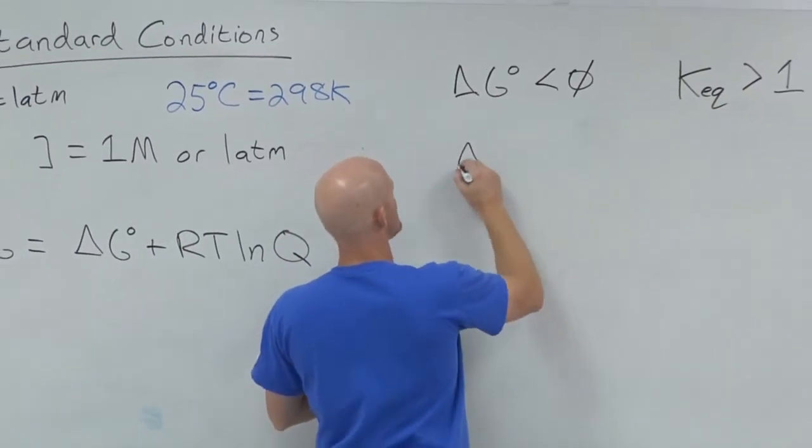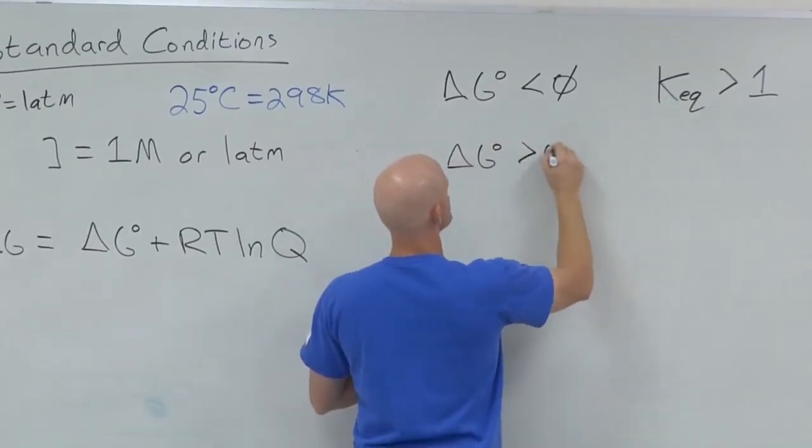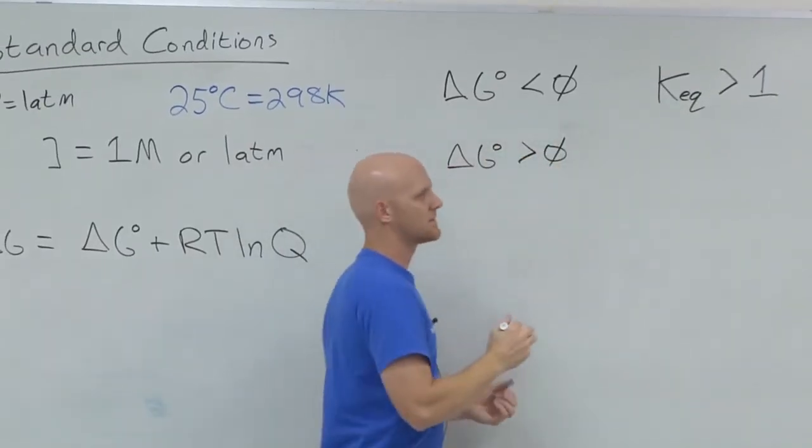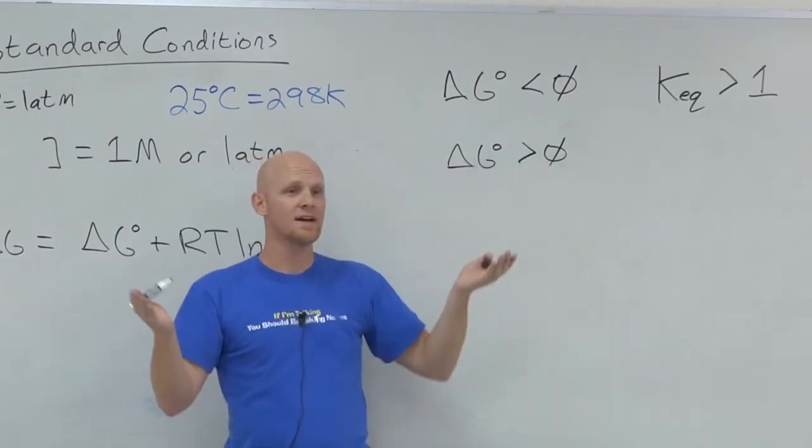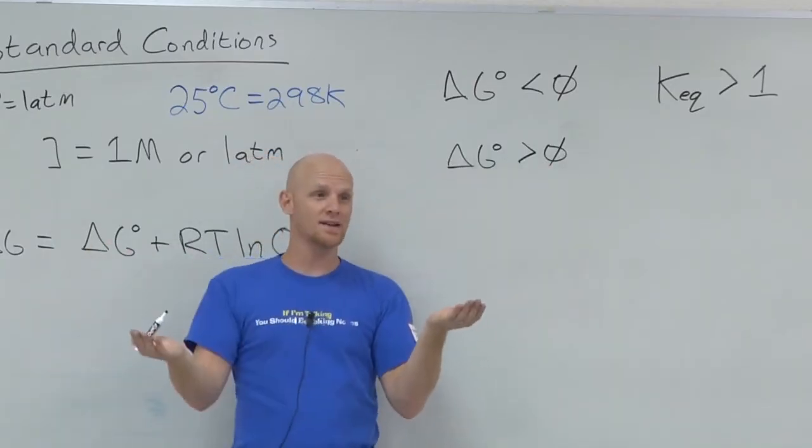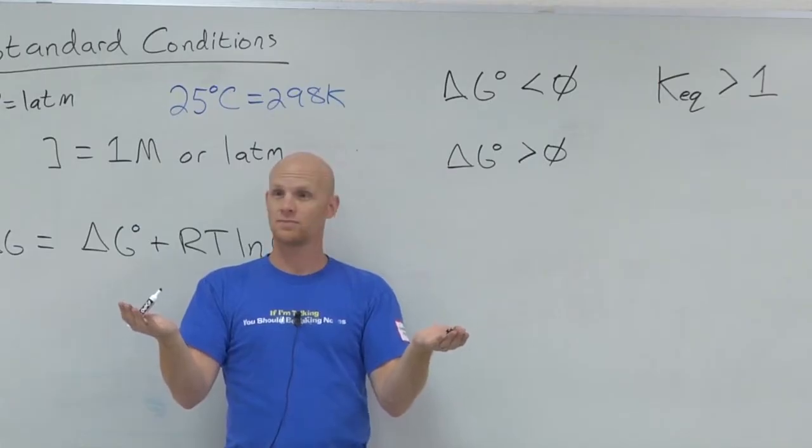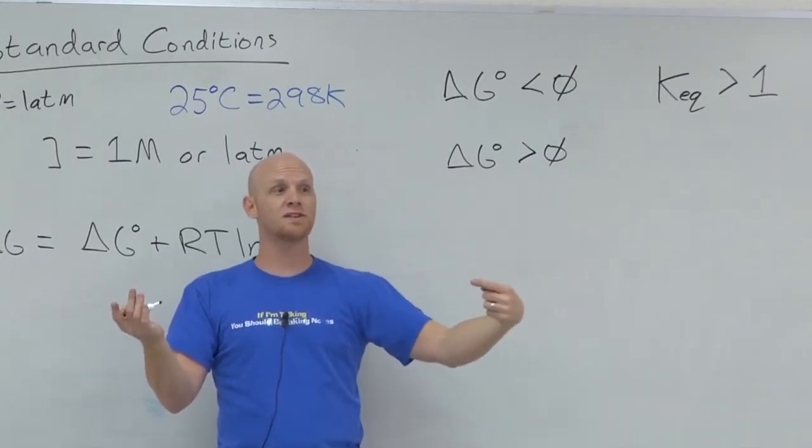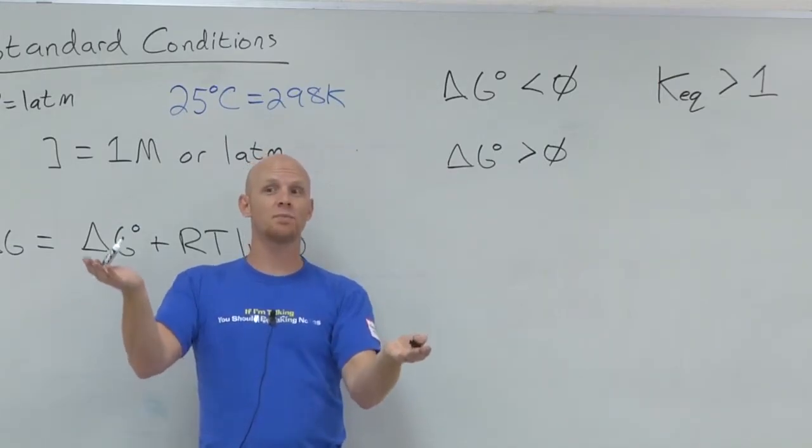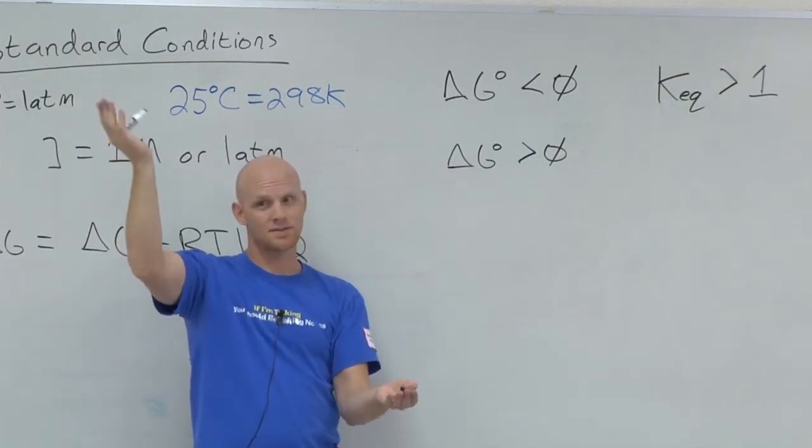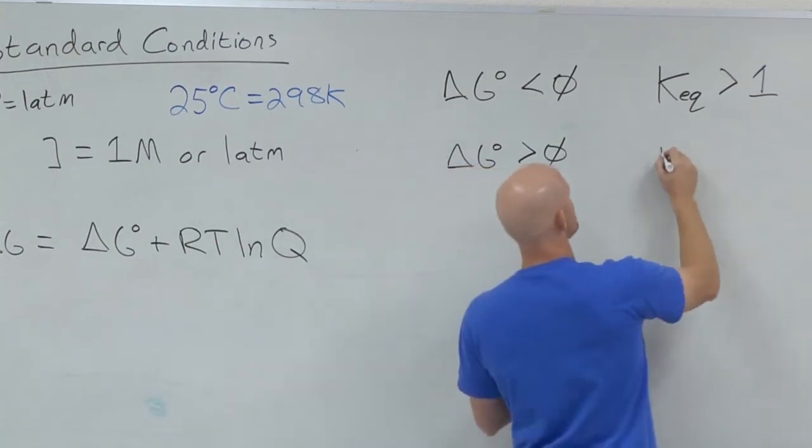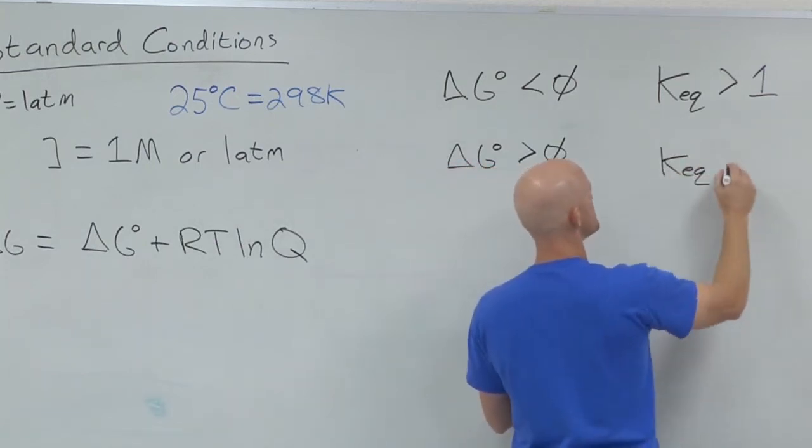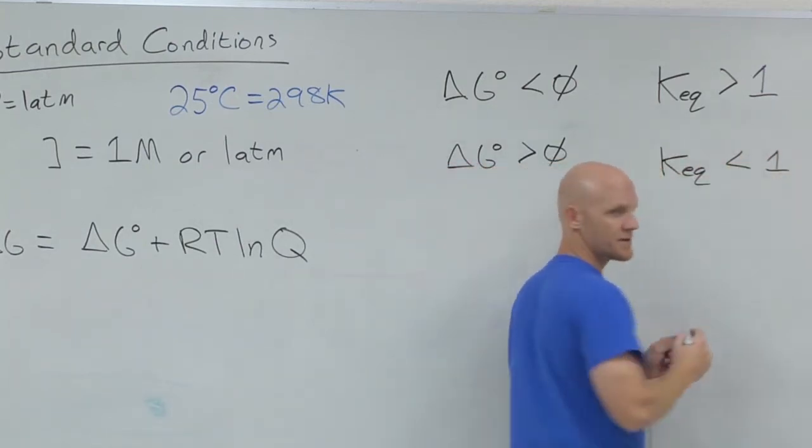And you can say the exact converse as well. If delta G standard is positive, well, again, standard conditions, you've got equal amounts. But if delta G standard is positive, then as the reaction is written left to right, is it spontaneous? No. Under those standard conditions, it'll actually be spontaneous going the other way. And so you'd end up with more reactants than products by the time you reach equilibrium. And in that case, you'd therefore expect Keq to be smaller than one.